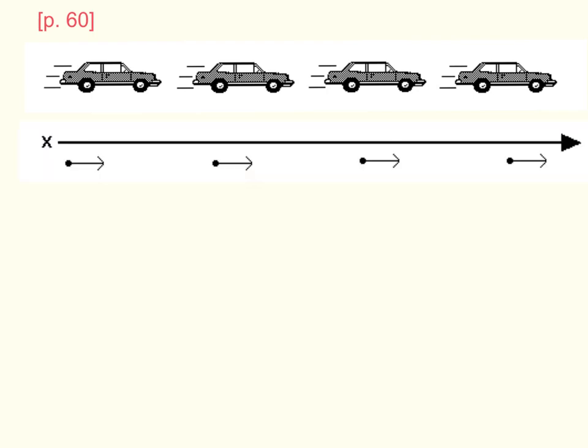The motion map of a car traveling toward the right, moving at a constant velocity, would look like this.